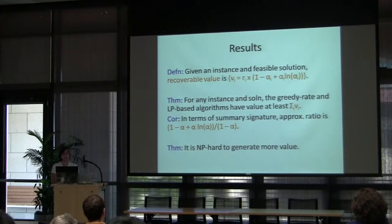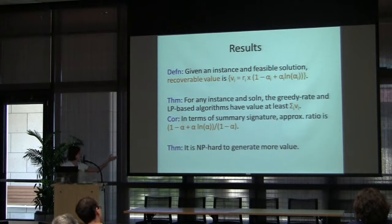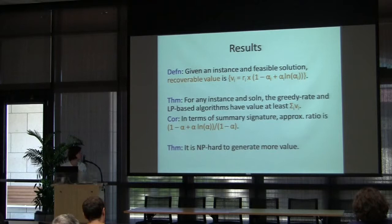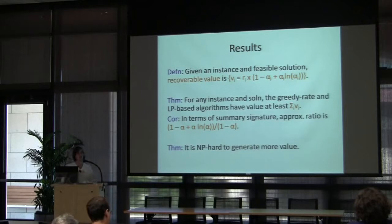We define two heuristics — greedy rate and LP-based — that achieve at least the sum of recoverable values. In terms of the summary signature, this yields an approximation ratio as a function of alpha that improves and generalizes the KPR result. We also show it's NP-hard to generate more than the recoverable value, proven using a family of instances all sharing the same signature.